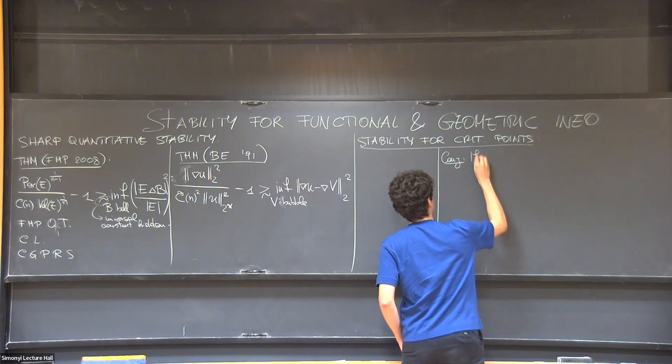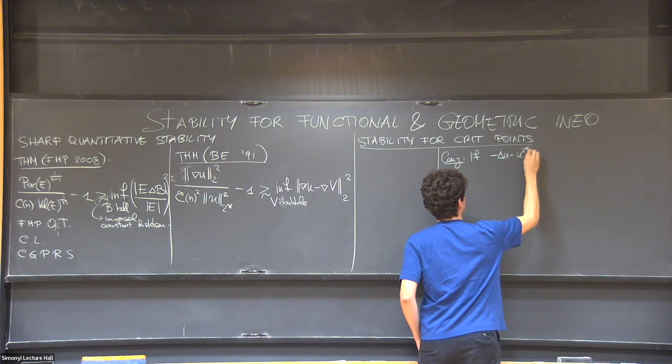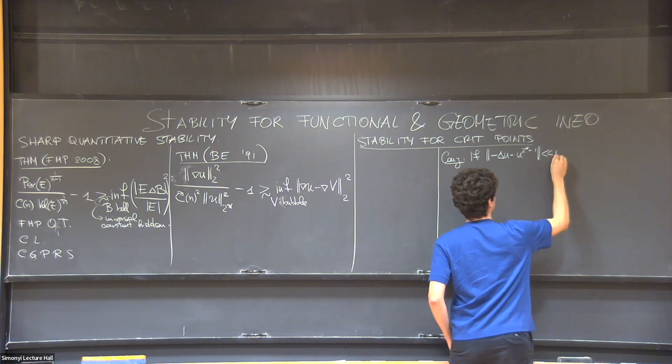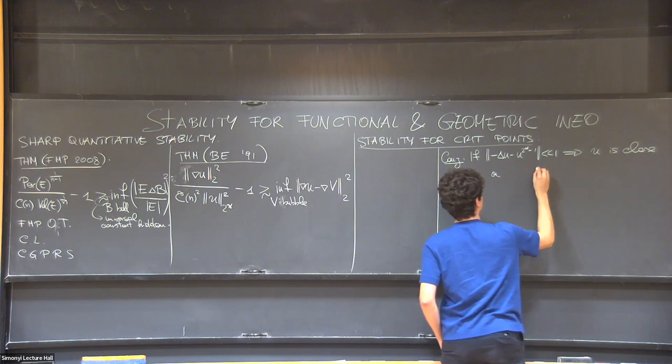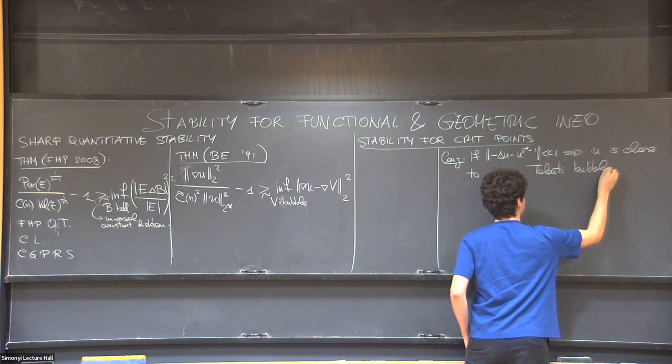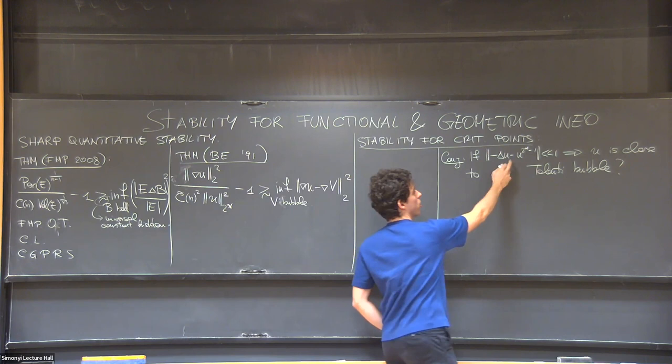This time, I leave much more space for the Sobolev case. So, in the Sobolev setting, one may conjecture. Let's say if I am almost a solution of the Euler-Lagrange equation, which is to say that this is small, then possibly U is close to a Talenti bubble.